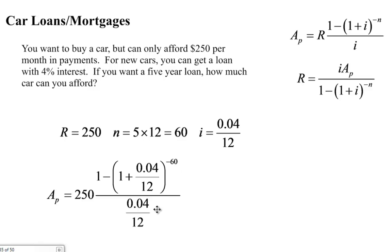All over .04 divided by 12, or .04 times 12. That gives us $13,574.77.